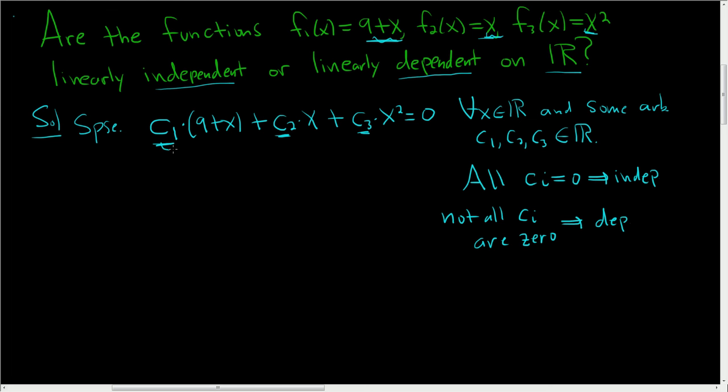Okay so we continue. So we distribute 9 c sub 1 plus c sub 1 x plus c sub 2 x plus c sub 3 times x squared. And this is equal to 0.